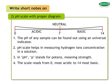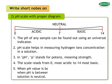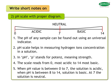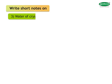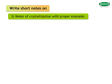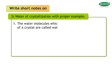The scale reads from 0 (most acidic) to 14 (most basic). When the pH value is between 0 to 7, the solution is acidic. When pH is between 8 to 14, the solution is basic. At pH 7, the solution is neutral.